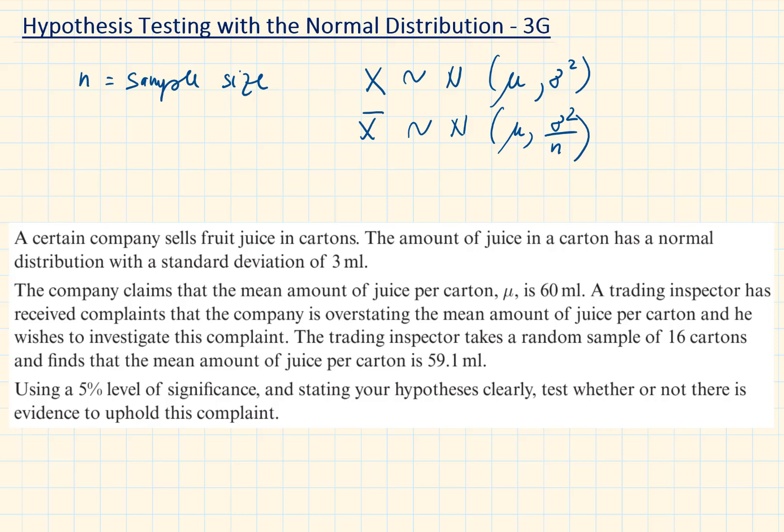We can first highlight what we are given. A certain company sells fruit juice in cartons. The amount of juice in a carton has a normal distribution with a standard deviation of 3 milliliters. The company claims that the mean amount of juice per carton is 60 milliliters.